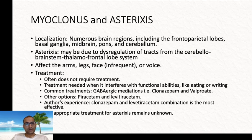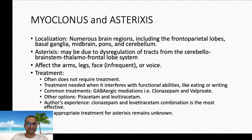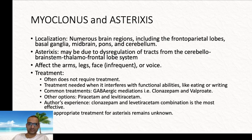The next condition discussed is myoclonus and asterixis. Myoclonus can occur due to stroke affecting multiple areas of the brain, from the cortex to the basal ganglia, midbrain, and cerebellum. Asterixis is thought to be secondary to dysregulation of the cerebellum, brainstem, thalamo-frontal lobe system. Myoclonus affects the arms, legs, face, and voice. Treatment is usually not required for either condition, but if it interferes with functional abilities like eating or writing, GABAergic medications can be tried. Some experience the best results with a combination of clonazepam and levetiracetam. For asterixis, no established treatment is available.